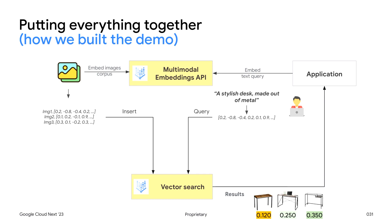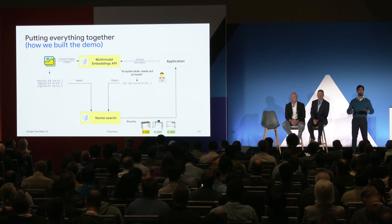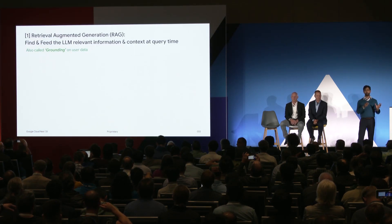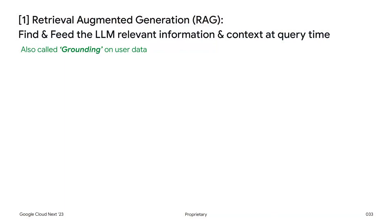Now Anand will tell us more about how embeddings are used in the world of generative AI. You're probably thinking embeddings are awesome — but the title of this talk had the term generative AI in it. Let's talk about how embeddings are used in the world of generative AI. By far the most popular usage is to power a paradigm called Retrieval Augmented Generation — which is a fancy way of saying let's find and feed the LLM pertinent context and information at query time. This paradigm is also often referred to as grounding.